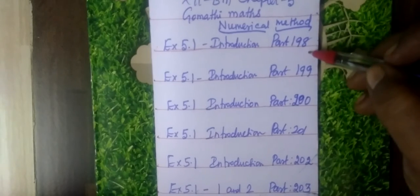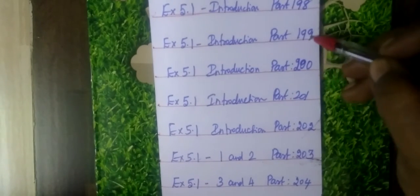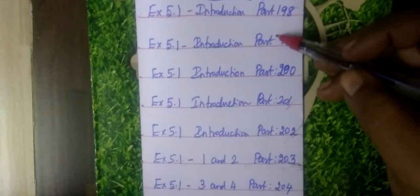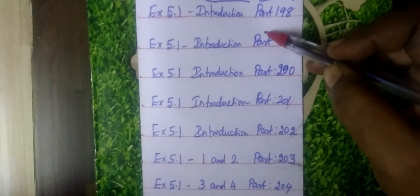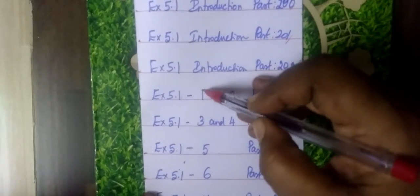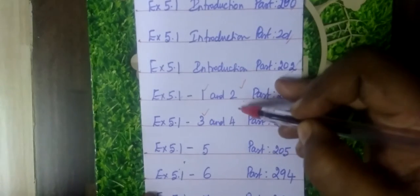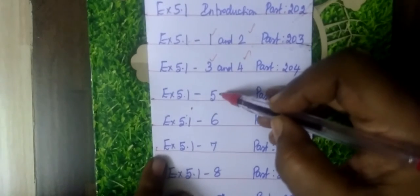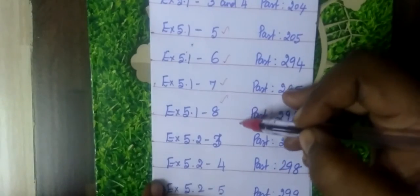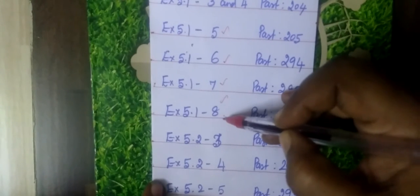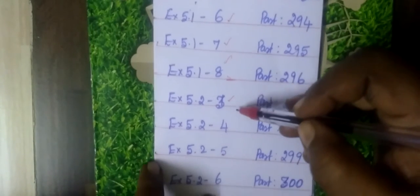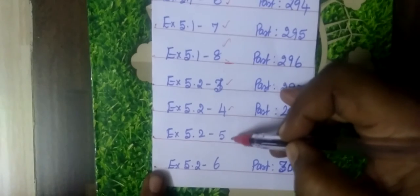Exercise 5.1, part numbers 188, introduction 99, then 200, 201, 202. You can see the introduction — go through Exercise 5.1. Question numbers 1, 2, 3, 4, 5, 6, 7, 8. Exercise 5.1 is equal to 10, then 8, then 5.2, questions 1 and 2. Next is question number 3, then 4, 5, 6.